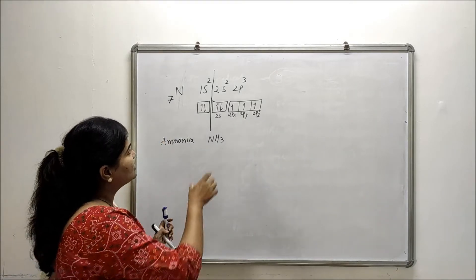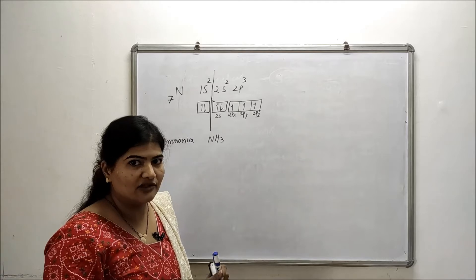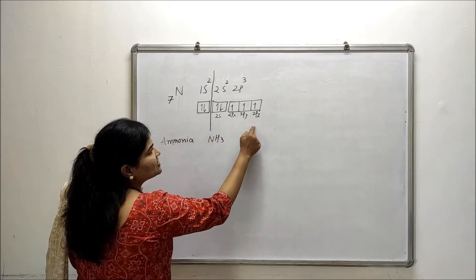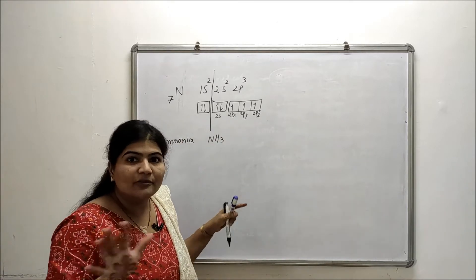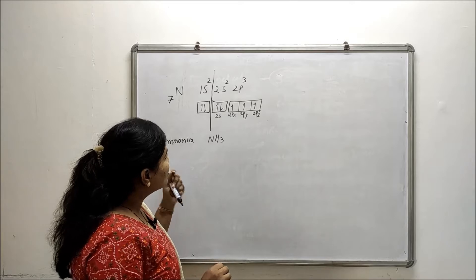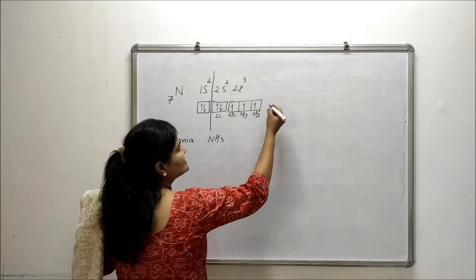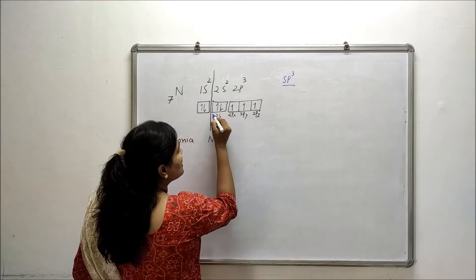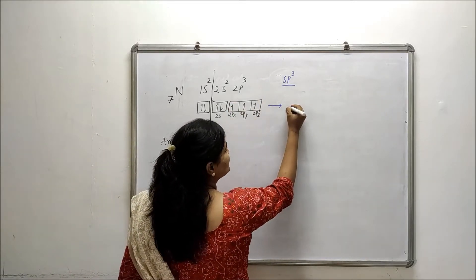This is the ground state configuration. For carbon we go for an excited state configuration because the 2pz orbital is empty, so we promote one electron from 2s to 2pz and get 4 unpaired electrons. But for nitrogen that is not the case — nobody is empty, and 2s is completely filled. So we directly go for hybridization in nitrogen.